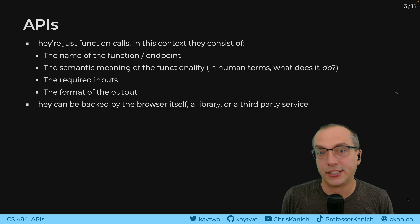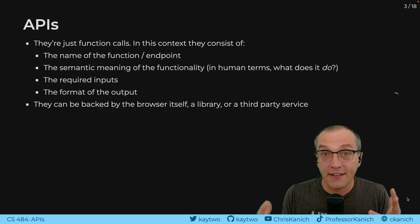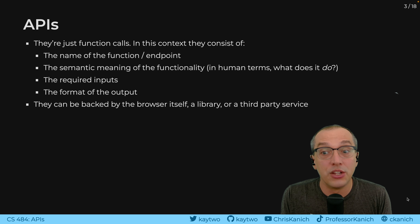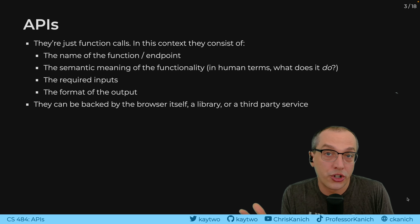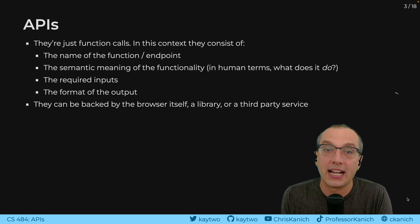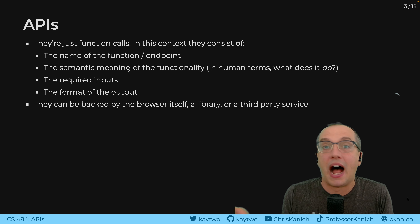At the end of the day, an API is a function call. In this context, within the browser and the web, they usually consist of the name of the function — sometimes called the endpoint — and the semantic meaning of that functionality. There will be a human-readable description of what that API endpoint is for, the required inputs, which can be normal function arguments like which user you're looking up, or metadata like an authentication token. And finally, the format and type of the output.